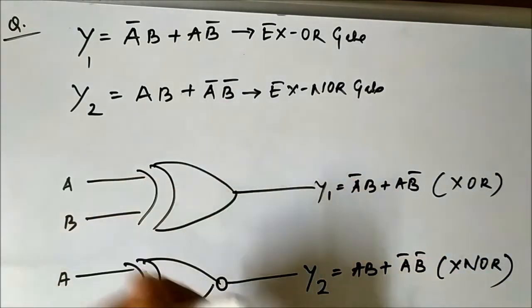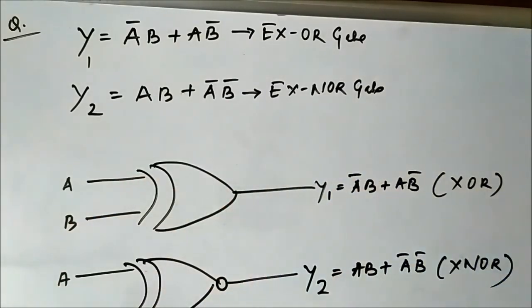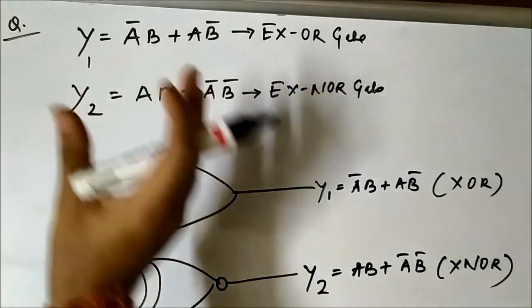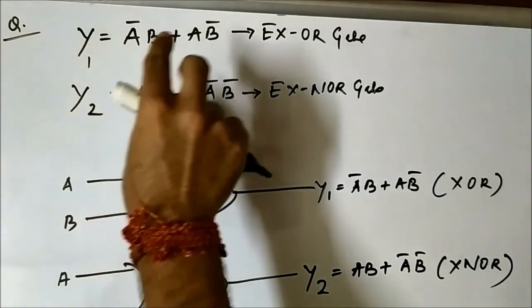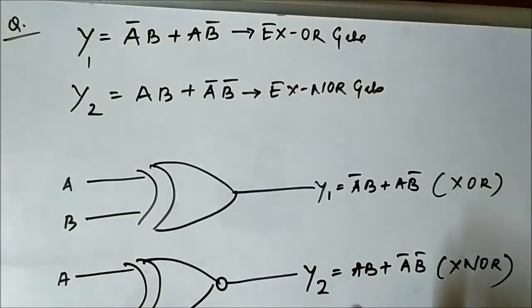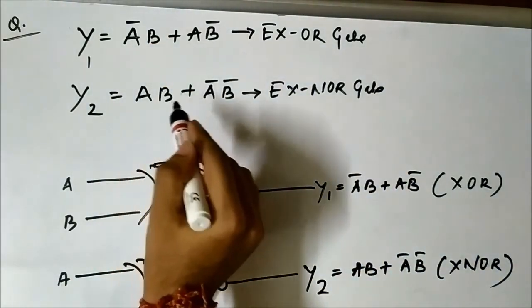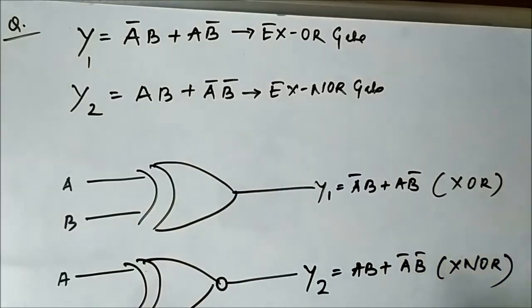These were some simple Boolean expressions. Now we'll move on to more complicated expressions where they consist of three or more terms and more signal values will be involved.